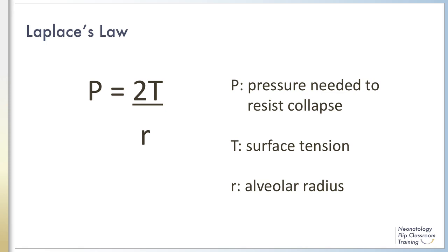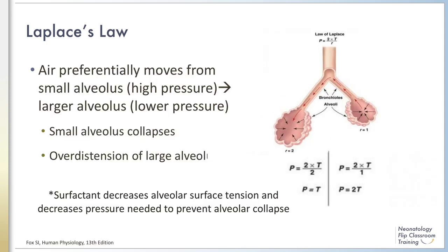Therefore, a large sphere requires less pressure to resist collapse compared to a smaller sphere. Applying Laplace's law to alveoli, we can understand why alveolar collapse and atelectasis occur in infants with respiratory distress syndrome, or RDS, which is secondary to surfactant deficiency.